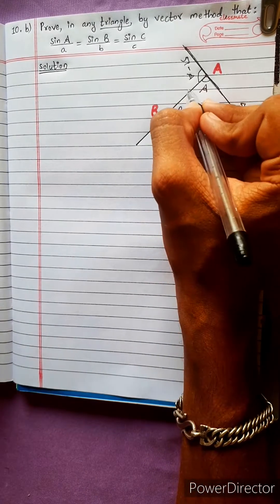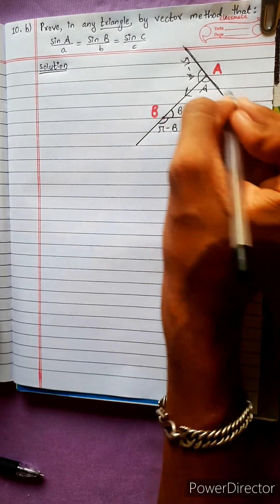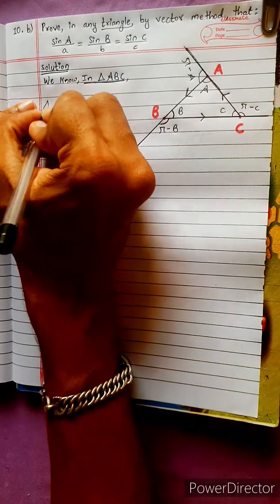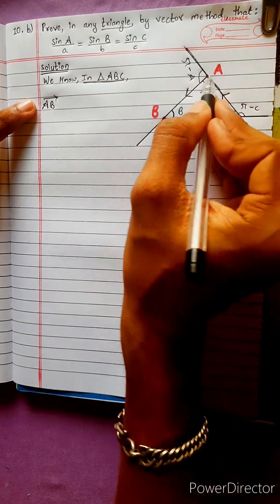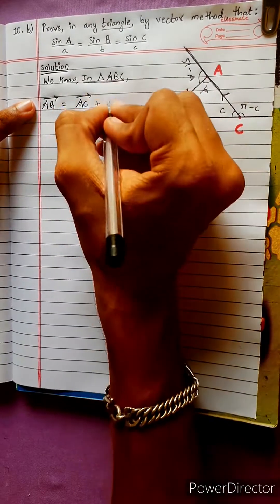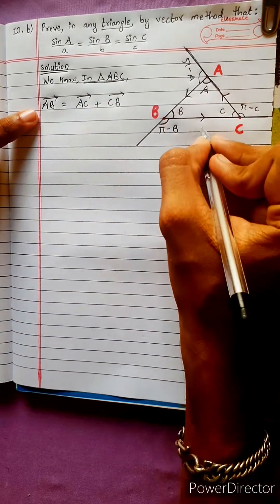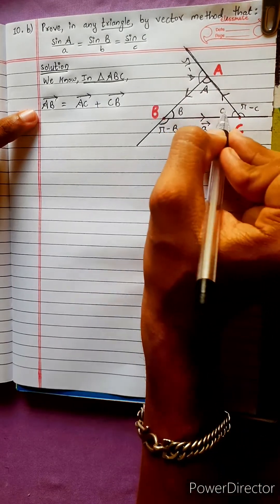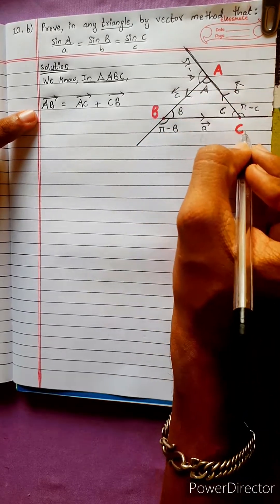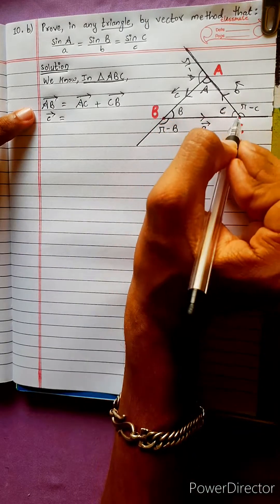How does the vector representation work? For triangle ABC, this is the AB vector. The AC vector is related. Now, suppose the angle involves vectors: the c vector and the b vector. The C vector equals the c vector, and B is the b vector.